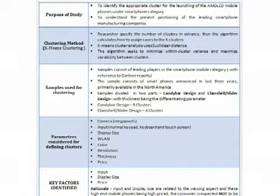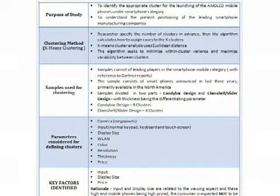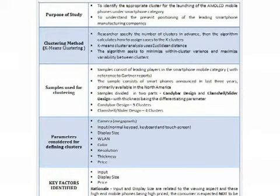The clustering method involves an algorithm that aims to minimize within-cluster variance and maximize the variability between clusters. The samples used for clustering were divided into two groups: one consisting of candy bar design and the other with clamshell or slider designs, with thickness being the differentiating parameter. Consequently, we arrived at five clusters in candy bar design and four clusters in clamshell or slider designs. The parameters considered include camera quality in megapixels, input method (conventional keypad, QWERTY keyboard, or touchscreen), display size, wireless LAN feature, color and resolution, thickness, and price. The key factors were chosen on the rationale that input and display sizes are related to the viewing aspect, and since these high-end mobile phones are highly priced, the consumer is not expected to be price sensitive.